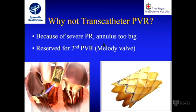You might ask why not just go straight to a transcatheter pulmonary valve replacement using the Melody valve. Unfortunately, mostly in these patients the annulus is too big and too elastic and flexible, so you cannot get a valve to sit in there well. We generally reserve the transcatheter PVR for the second pulmonary valve replacement.